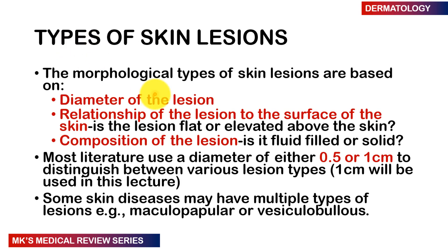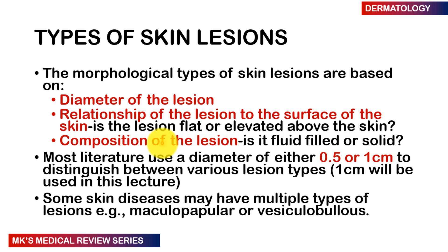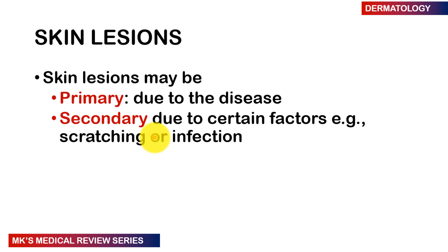The morphological types of skin lesions are based on predominantly three things: the diameter of the lesion (we'll use 1 cm as a cutoff), the relationship of the skin lesion to the surface of the skin — is it flat or would you feel a bump? — and the composition of the lesion — is it filled with fluid or solid? Some diseases may have multiple types of lesions, such as macules and papules together, called a maculopapular rash, or vesicular-bullous presentations.